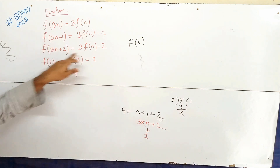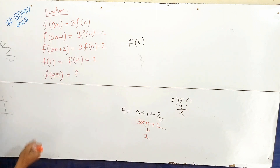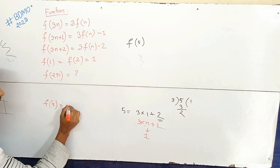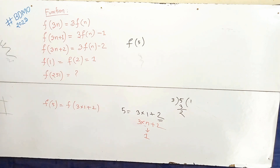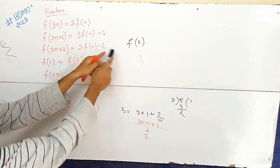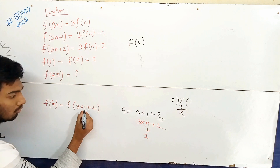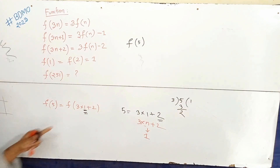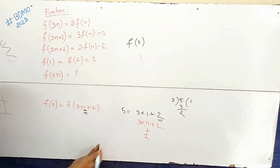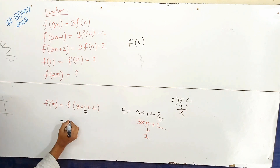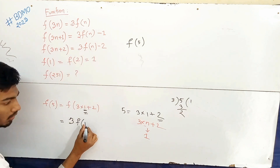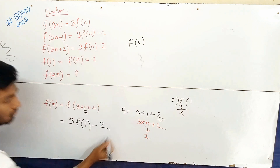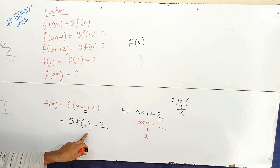For example, let's compute f(5). We write 5 in the form 3n+2, so 5 = 3(1)+2. Therefore, f(5) = f(3·1+2) = 3f(1) - 2 = 3(1) - 2 = 1 - 2.